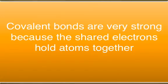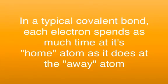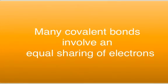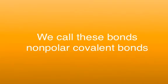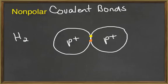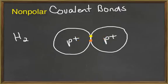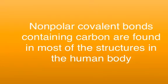Covalent bonds are very strong because the shared electrons hold the atoms together. In a typical covalent bond, the atoms remain electrically neutral because each shared electron spends as much time at home as away. Many covalent bonds involve an equal sharing of electrons. Such bonds, which occur between two atoms of the same type, are called nonpolar covalent bonds. For example, with hydrogen or H2, the shared electrons are pulled towards the nuclei of each hydrogen with an equal force, because each hydrogen has only one proton, and thus each has a charge of plus one. The electrons will be equally pulled to the positive charges. Nonpolar covalent bonds containing carbon atoms are found in most of the structural components of the human body, and thus are very common.